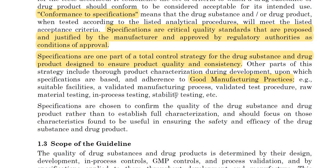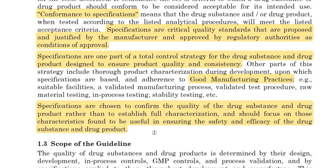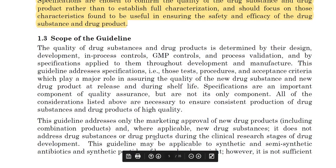Keeping safety and efficacy in mind, the specification is chosen and its limits are standardized for each product. The quality of the drug substance and drug product is determined by design, development, in-process control, GMP control, and process validation, and by the specifications applied to them throughout development and manufacture. This guideline addresses those test procedures and acceptance criteria which play a major role in assuring the quality of a new drug substance and drug product at release and during shelf-life.